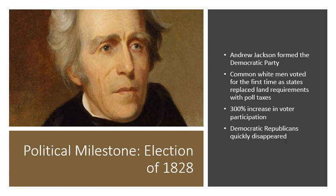The next political milestone was the election of 1828. Andrew Jackson, who felt the election had been stolen from him in the corrupt bargain, left the Democratic-Republican Party and formed his own party — simply known as the Democratic Party. This election was also significant because in many states it was the first election where common white men voted, as states were replacing land requirements with poll taxes, increasing voter participation by 300 percent. Jackson won and the Democratic-Republicans quickly disappeared.